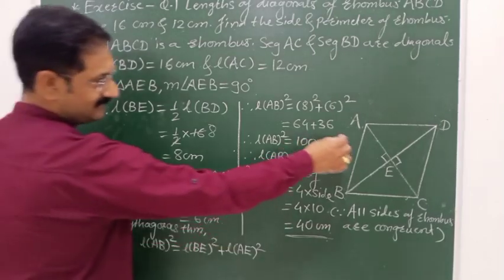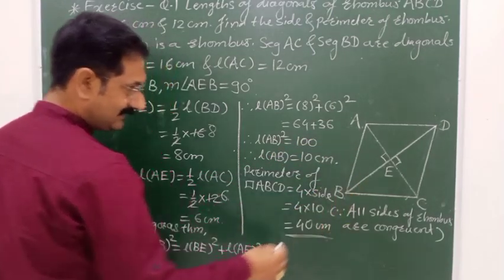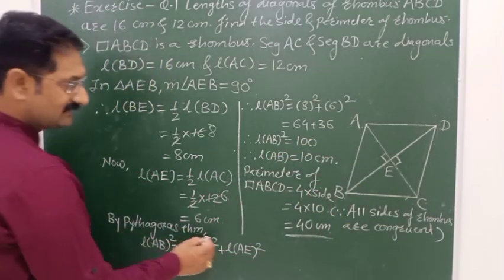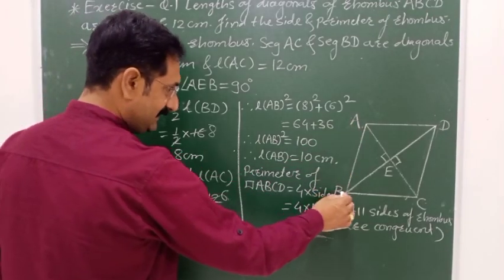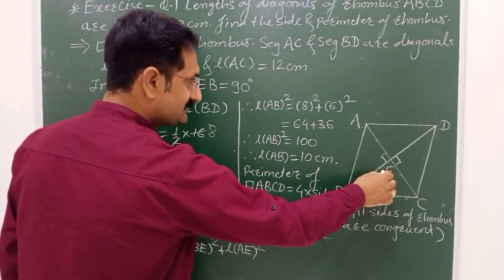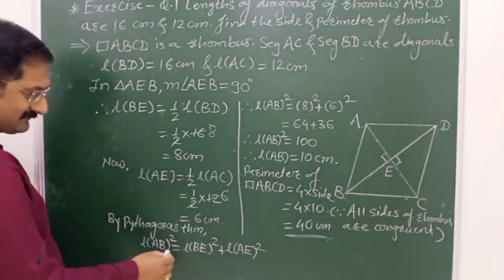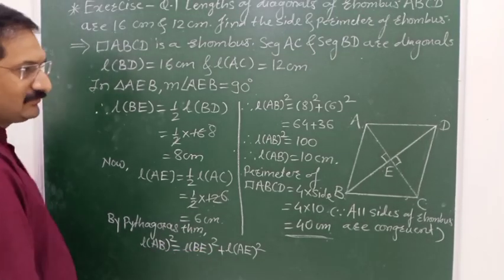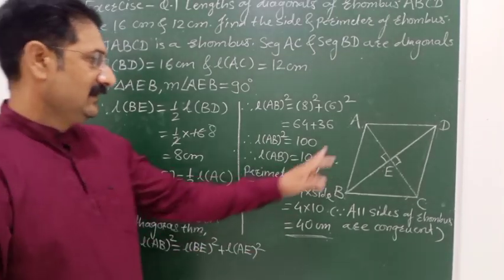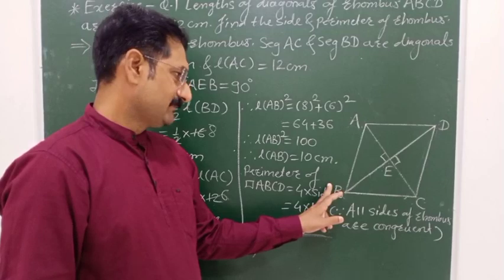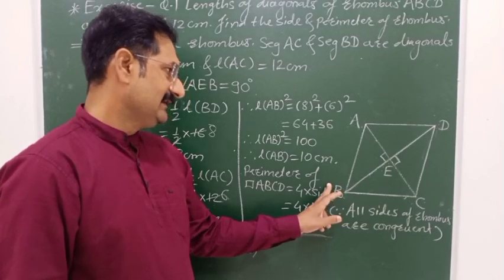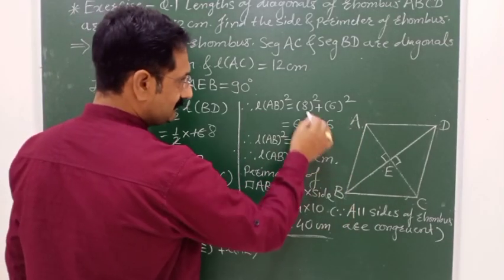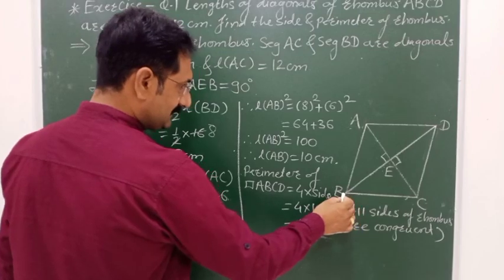Because AEB is a right angle triangle, in triangle AEB by Pythagoras theorem: AB² is equal to BE² plus AE², where AB is the hypotenuse of the right angle triangle.